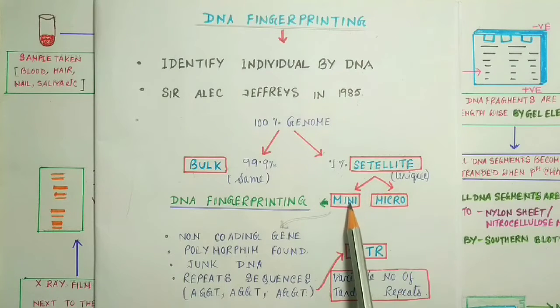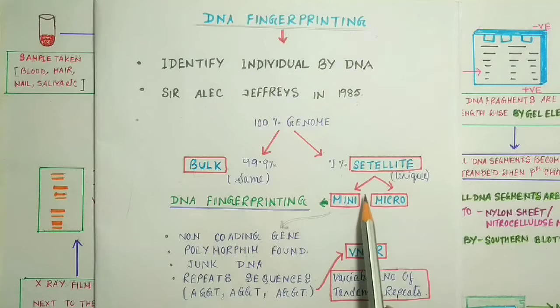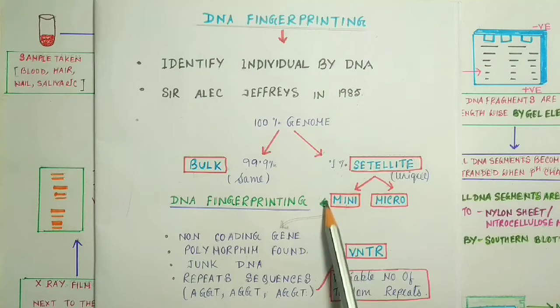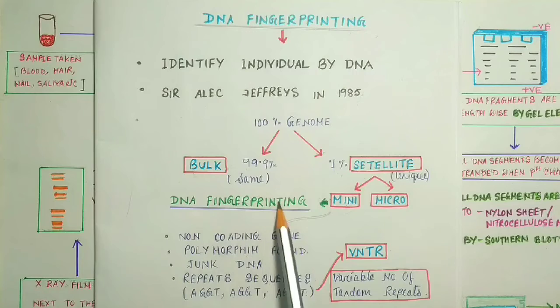One is called microsatellite and another is called minisatellite. But we need this minisatellite DNA for this DNA fingerprinting process.